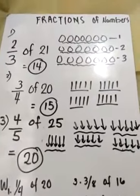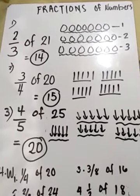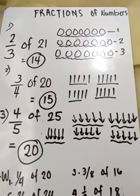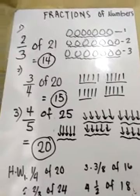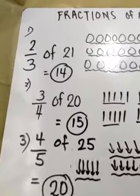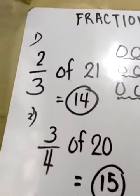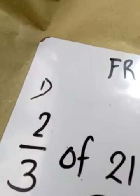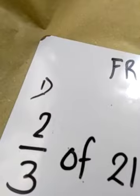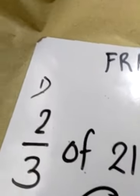Good afternoon children. We are going to review our lessons again for fractions of numbers. We're going to start with number one. Our problem for number one is two-thirds of 21. Since 21 is the number that we're going to divide, we're going to look for that particular factor in 21.